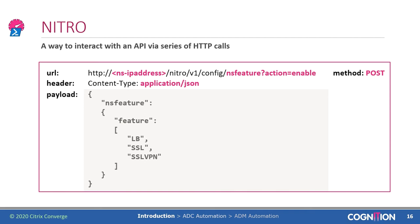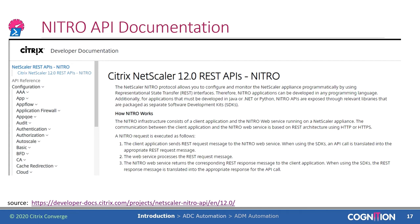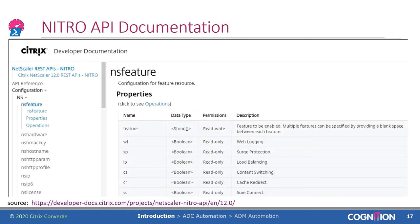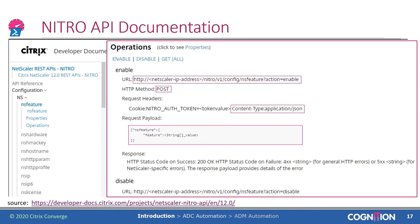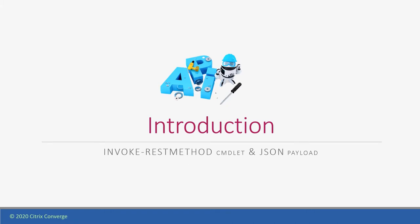That's quite some information if you need to find all the ingredients yourself. The good news is that there is extensive Nitro API documentation available on the Citrix developer documentation pages. Feel free to check it out and go through the getting started guide. Dive into all the different resource types and zoom in on the different operations — because zooming in on the operations will show you all the information you need for your Nitro call: the URL, HTTP method, content type in your request header, and even the formatting of your JSON request payload. That should make it a lot easier to get started.